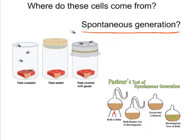A scientist in 1668 by the name of Francesco Redi performed an experiment where he used an unsealed flask with meat in it as the control group. He was trying to show that if the flask were sealed, you would not have life growing on the meat. He also covered a flask with gauze — the flies were attracted to and could smell the meat, but the maggots were coming from the flies, not from the meat itself.